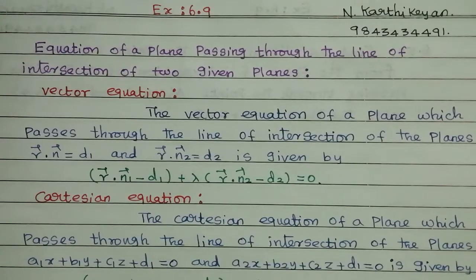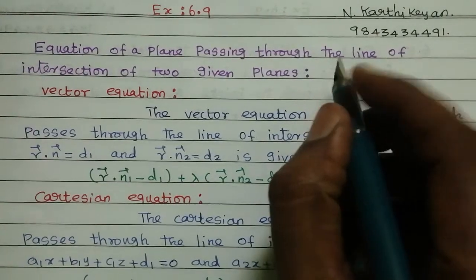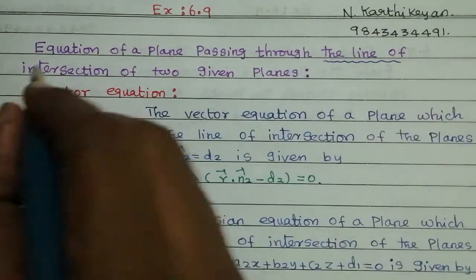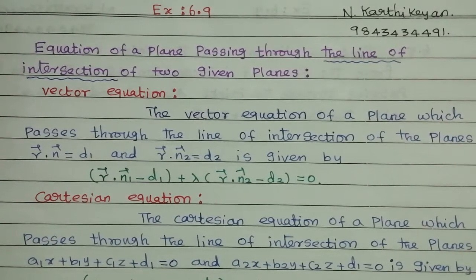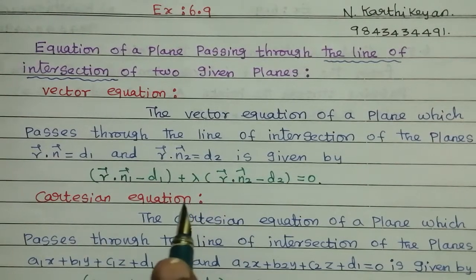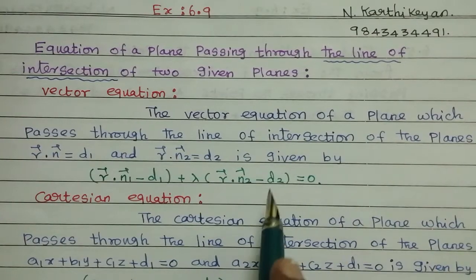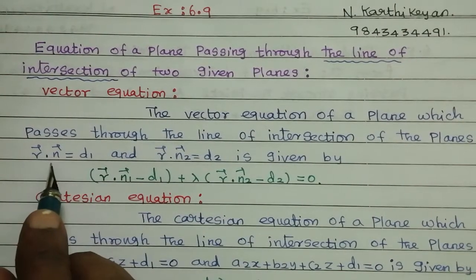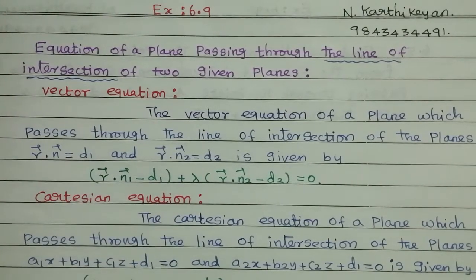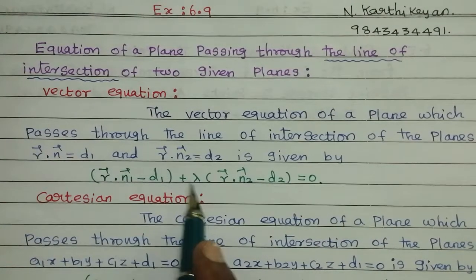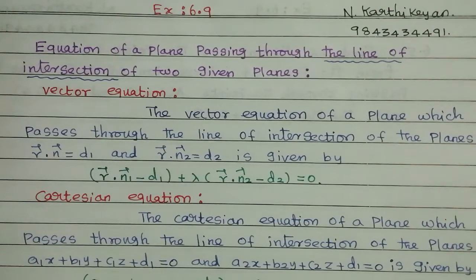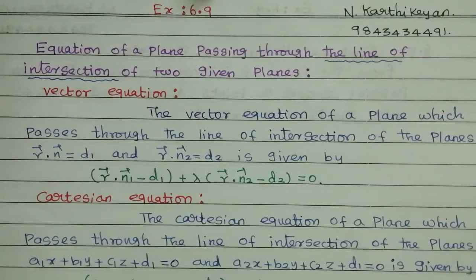Equation of the plane passing through the line of intersection of two given planes. The vector formula: the vector equation of the plane which passes through the line of intersection of the planes r-vector dot n1-vector equal to d1, and r-vector dot n2-vector equal to d2, is given by: r-vector dot n1-vector minus d1, plus lambda into r-vector dot n2-vector minus d2, equal to 0. This is the vector form.